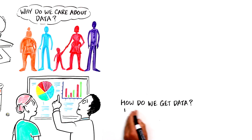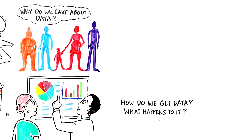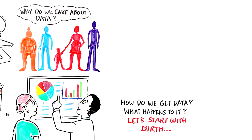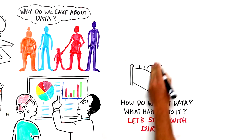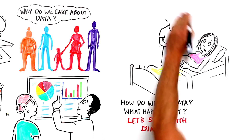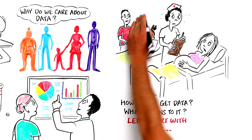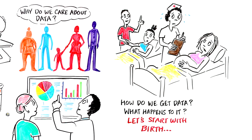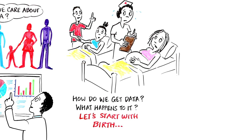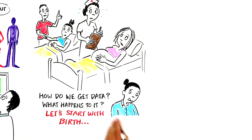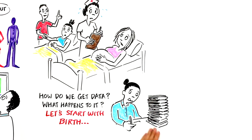So how do we get data, and what happens to it? As an example, let's start with a birth. A mother is about to have a baby. The midwife, struggling to keep up with the volume of patients, does her best to fill out the birth registry, like birth weights, health, and gestational age. Later, the hospital records officer collects the data in these registries, which are then reported to the district health administrator.